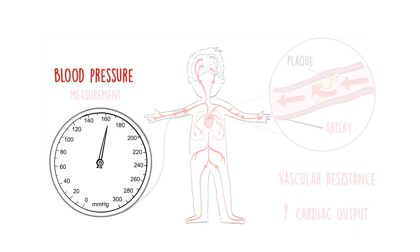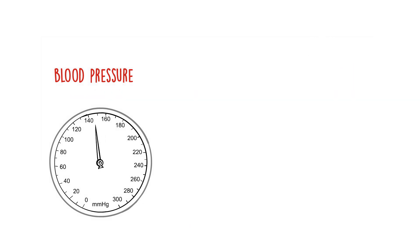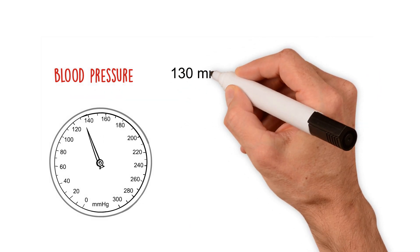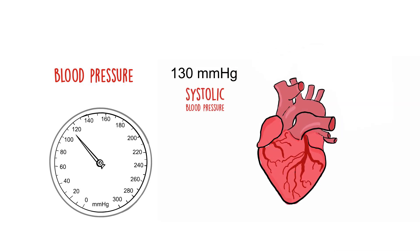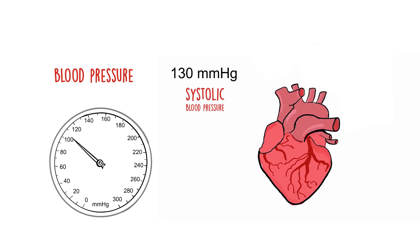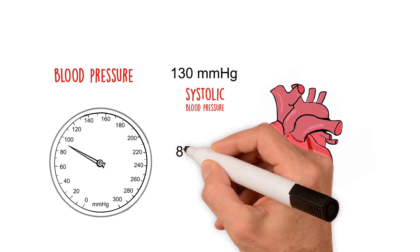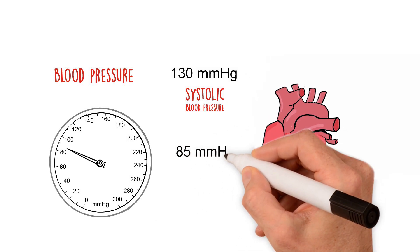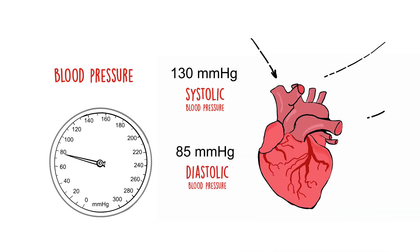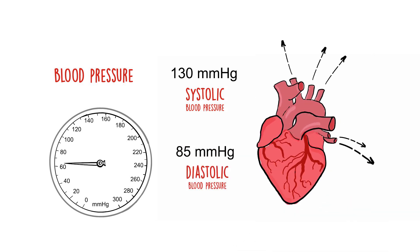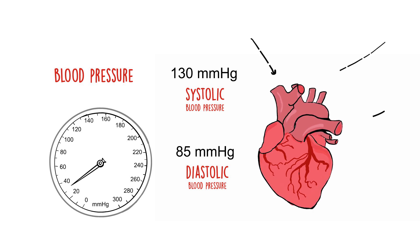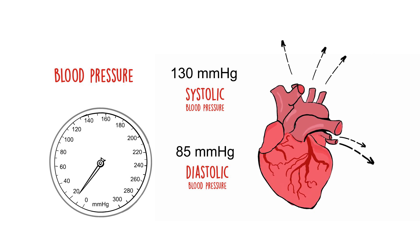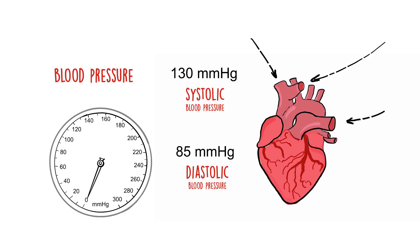Blood pressure is typically represented by two numbers. The top number is your systolic blood pressure, which is the measurement of the force of the arteries as your heart pumps blood. The bottom number is your diastolic blood pressure, or the measurement of the force in the arteries as your heart is relaxing or refilling.